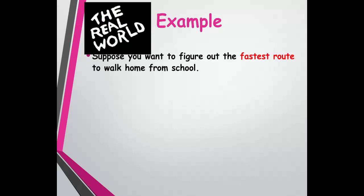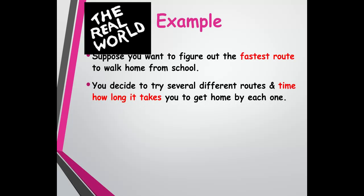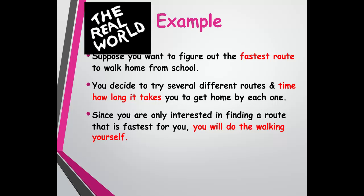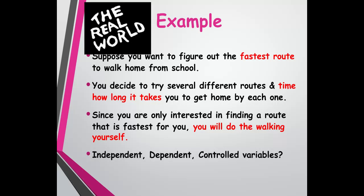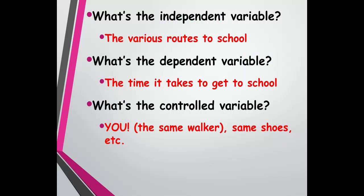Here's a great example: suppose you want to figure out the fastest way to walk home from school. You decide to try several different paths and time how long it takes. Since you're only interested in finding the fastest route and you are doing the walking — what is the independent variable? That's the different routes you take to school. The dependent variable, the thing you measure, is the time it takes. And the controlled variables? You're the same walker with the same stride, same shoes, going when temperatures are about the same, drinking the same amount of water each day — that sort of thing.